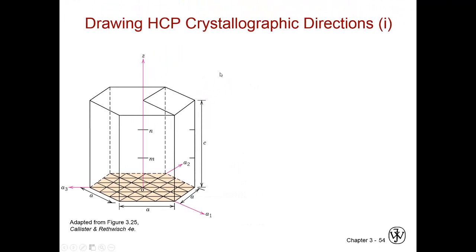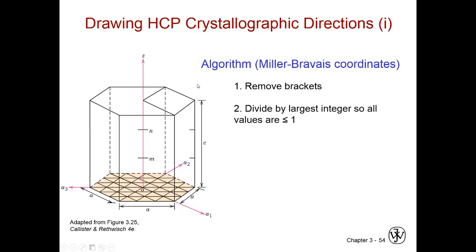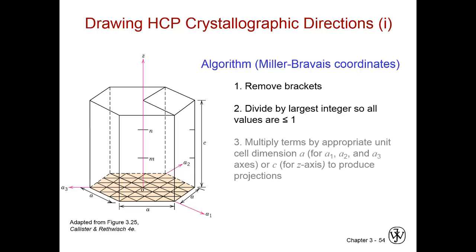When you have a direction that is in the Miller-Bravais system, we have four of these directions. And I'll give an example in just a bit. But we remove the brackets first, divide by the largest integer so all values are less than or equal to one, and then multiply by the unit cell dimension A for whichever one, two, three, or C for the projections. And then we step off these projections.